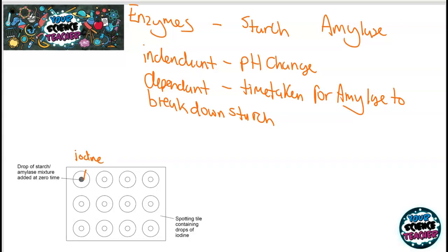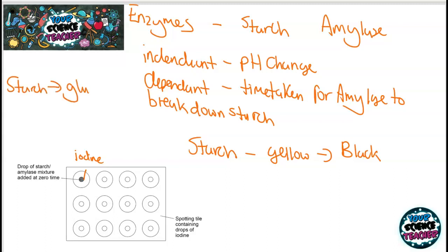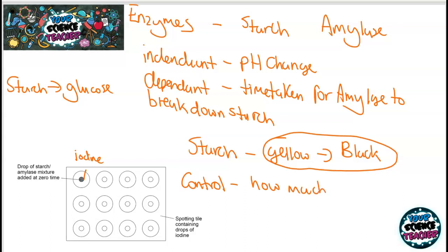To detect starch, you use iodine solution. The first step is spotting each well on the spotting rack with one or two drops of iodine. If starch is present, you observe a colour change from yellow to black. Once the amylase has broken down all of the starch — converting it to glucose — you no longer see that yellow-to-black change; the iodine just stays yellow. In this practical it's key to control how much of each pH buffer solution, amylase, and starch you use.